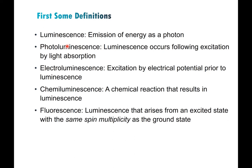Within photoluminescence, there are two major mechanisms. Fluorescence is when luminescence occurs from an excited state that has the same spin multiplicity as the ground state — usually singlet to singlet. It goes to a singlet excited state and then relaxes to the singlet ground state. But it could also involve other states if the ground state is not a singlet. So fluorescence is any time luminescence comes from an excited state where the spin is the same as the ground state.